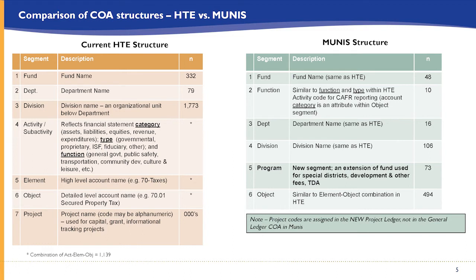The sixth segment is the object — one segment rather than three — representing assets, liabilities, revenues, expenses, etc. That is being reduced from over 1,100 to under 500 in the new chart, eliminating a lot of redundancy in the accounts.